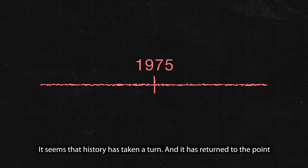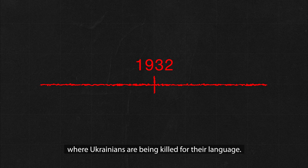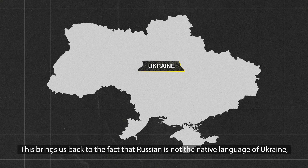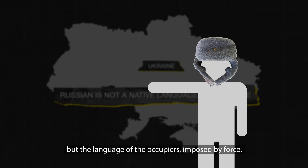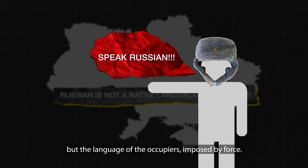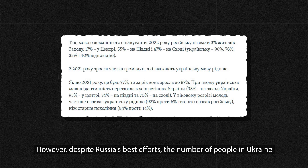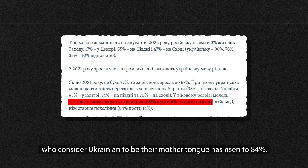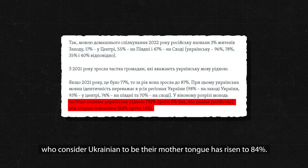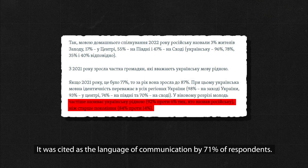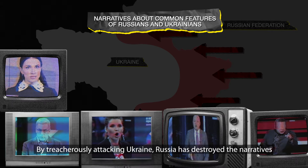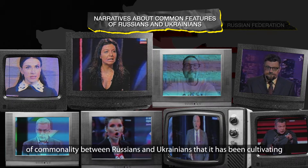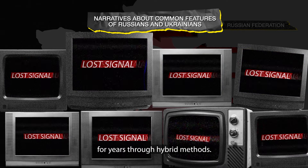It seems that history has come full circle, and Ukrainians are once again being killed for their language. This brings us back to the fact that Russian is not the native language of Ukraine, but the language of the occupiers imposed by force. However, despite Russia's best efforts, the number of people in Ukraine who consider Ukrainian to be their mother tongue has risen to 84%, and it was cited as the language of communication by 71% of respondents. By treacherously attacking Ukraine, Russia has destroyed the narratives of commonality between Russians and Ukrainians that it had been cultivating for years through hybrid methods.